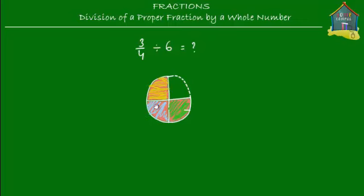We've got the same amount of pizza as before, but now we have six friends instead of three — double the number. We can't give one slice to each friend because we have only three slices. So let's cut up the pizza further into eight slices instead of four. Now we have two yellow, two blue, and two green slices — that's six slices total.